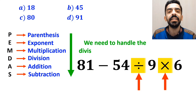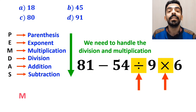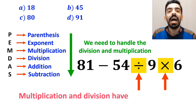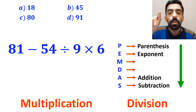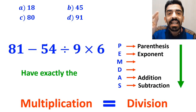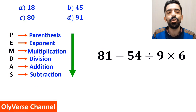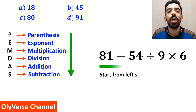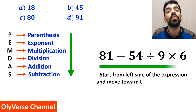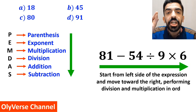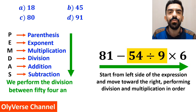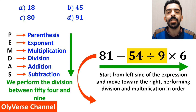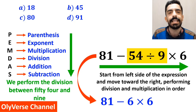In the next step, we need to handle the division and multiplication, since multiplication and division have higher priority than subtraction. However, it's very important to note that multiplication and division have exactly the same level of priority. In this situation, the best thing to do is to start from the left side of the expression and move toward the right. So first we perform the division between 54 and 9, and this expression simplifies to 81 minus 6 times 6.